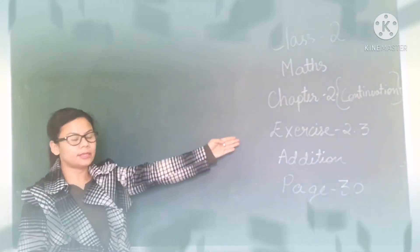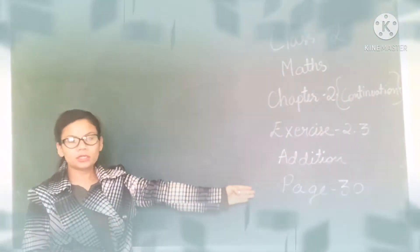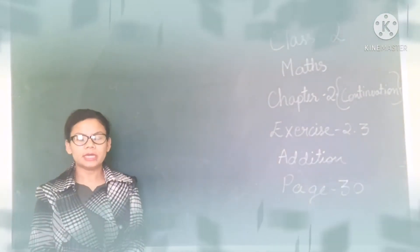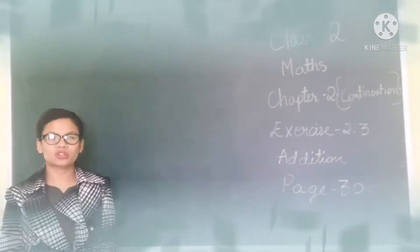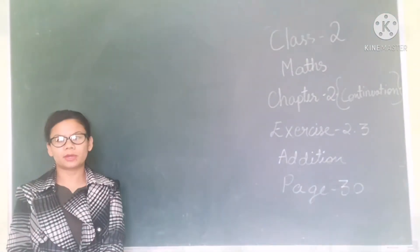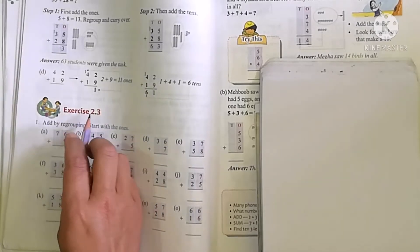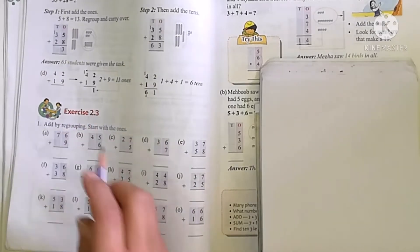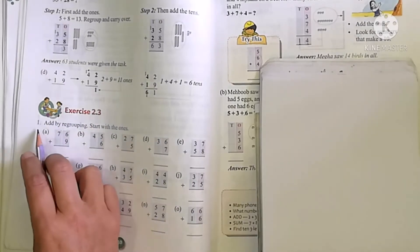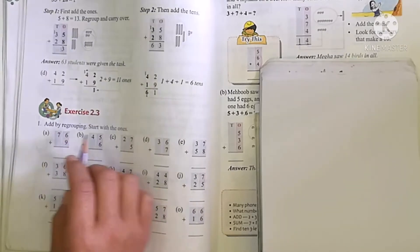The name of the chapter is Addition. Now turn to page number 30. Take out your textbook and turn to page 30. From here we will do it again. Exercise 2.3, page number 30. Question 1: Add by regrouping.